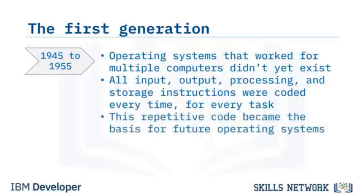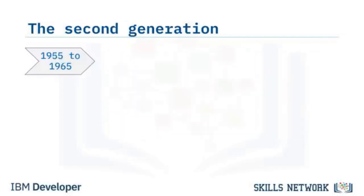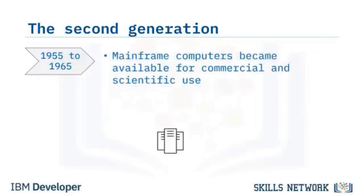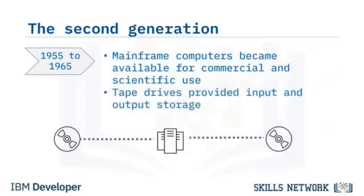Each computer's parameters were uniquely created for every job using machine language. However, some of the code developed during this era became the basis for future operating systems. During the second generation, mainframe computers became available for commercial and scientific use. Tape drives provided input and output storage.